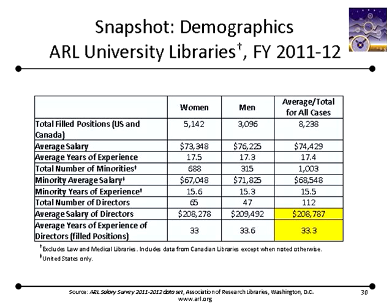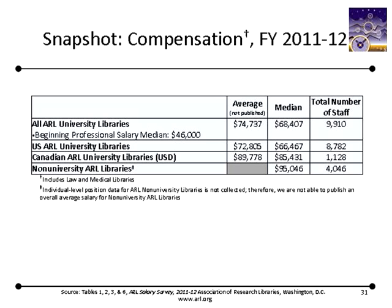The gender pay gap exists among minority librarians as well. In 2011-12, the overall salary for female minorities in ARL libraries was 93.34 percent of that of male minorities. The average salary of the 112 ARL university library directors was $208,787 in 2011-12, and the average years of experience for ARL university library directors was 33.3. The salaries of law and medical library directors were not included in the calculation of these statistics.